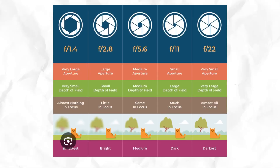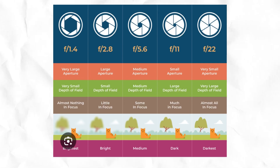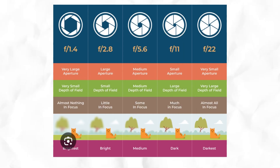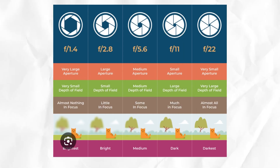Aperture also controls how much of your picture is in focus. If you're taking a picture of an object right in front of you with a lower f-stop, things closer to your camera lens are more in focus while everything else in the background is blurry. But if your aperture is very wide, things right in front of your camera will be blurry while the background is more in focus.